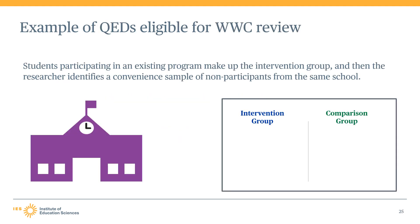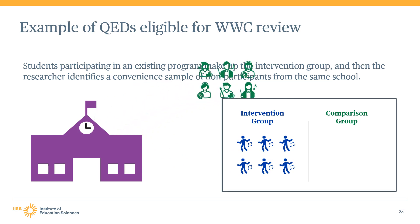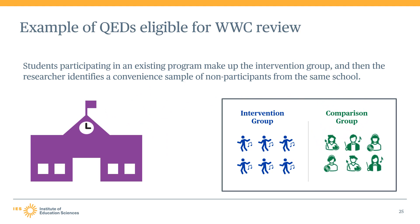QEDs that use convenience samples for group formation are eligible for WWC review. Consider an example where researchers are evaluating the impact of participation in student dance on students' class attendance. All students who currently participate in dance are designated as the intervention group, and students not enrolled in dance but enrolled in music or art courses are designated as the comparison group. This type of QED, where groups are formed using an uncontrolled assignment process, is eligible for WWC review as a QED.